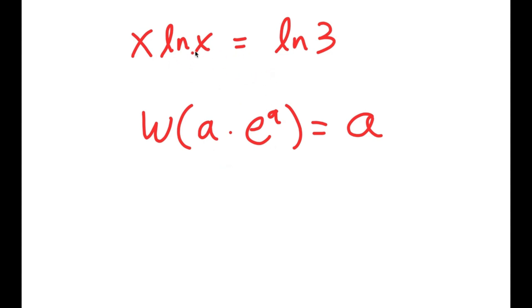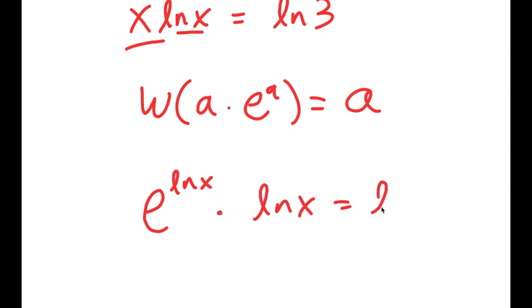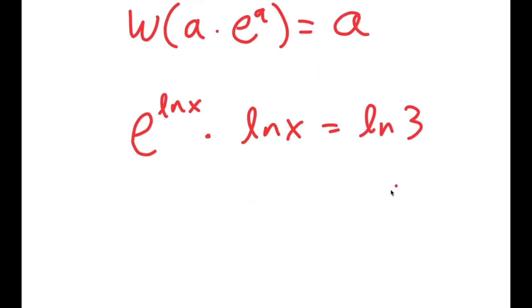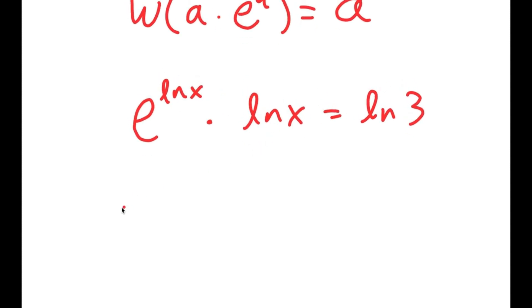Well, I'm going to first start by rewriting this x as e to the power of ln of x, because e to the power of ln cancel out, so that's just x. So x is the same thing as e to the power of ln x, and I have this times ln x is equal to ln 3. Now notice how this is in the form a times e to the power of a, with a being ln x.